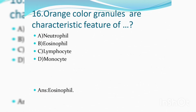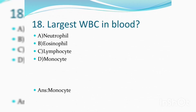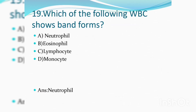The color of neutrophil granules under Leishman stain is lilac color. Orange-colored granules are characteristic features of eosinophils. Which of the following is an agranulocyte? Answer: Lymphocyte. The largest WBC in blood is monocyte. Which of the following WBC shows band forms? Answer: Neutrophil.